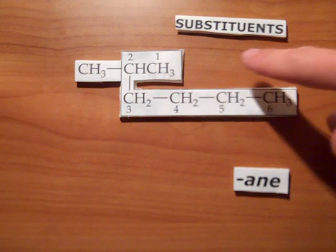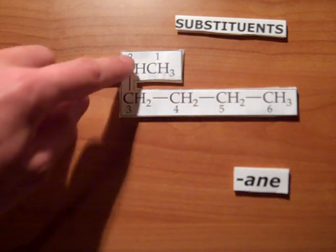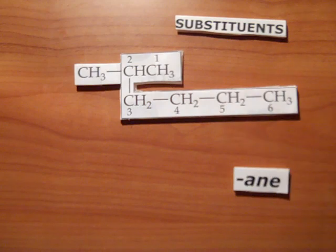Here we start at the upper right corner, because this places this CH3 on the second carbon atom, as opposed to the fifth if we started on the lower right. We want the lowest number for the substituent position.